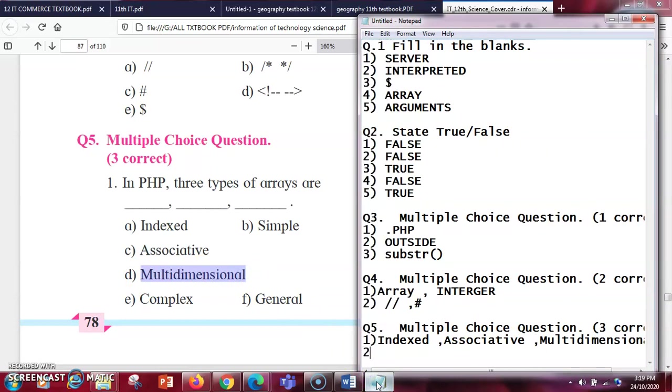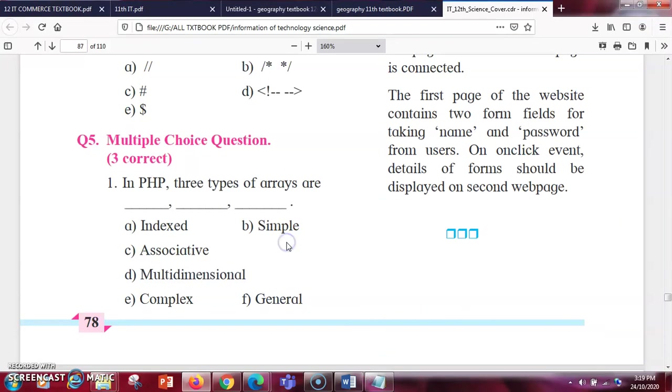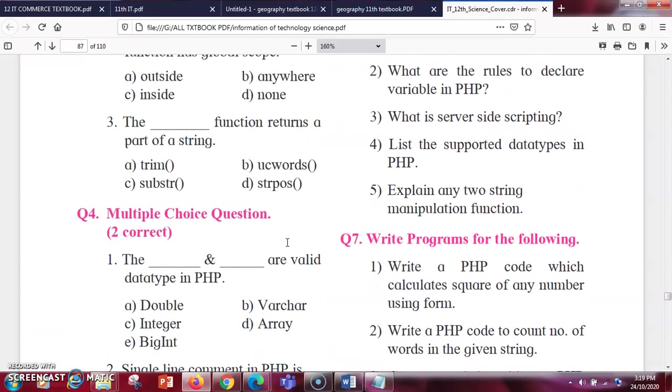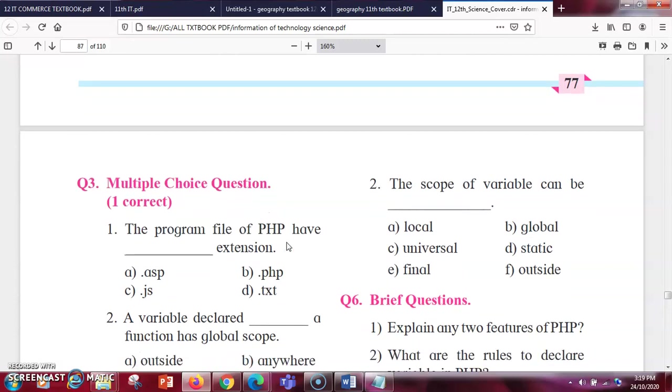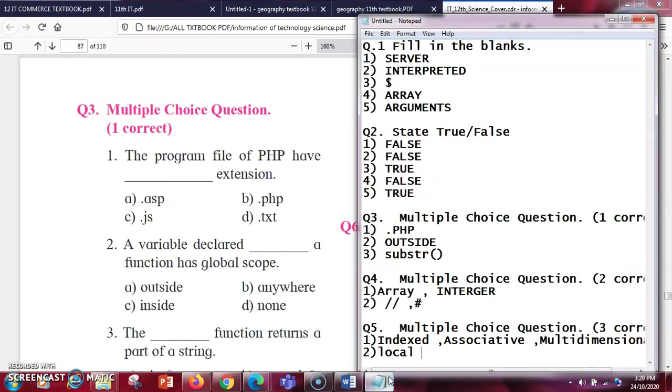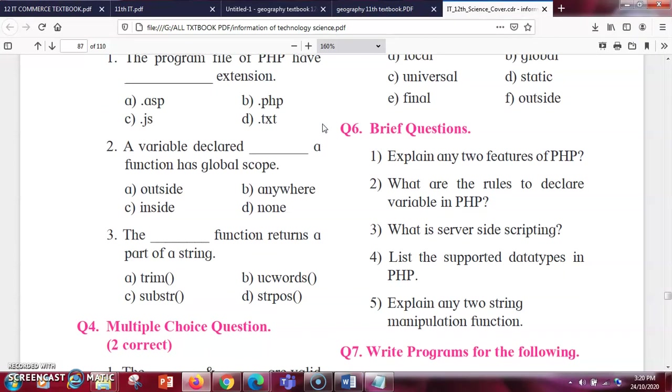Next question, the scope of variables can be dash. So the scope can be basically local, global, and static. These are the scopes of the variable.